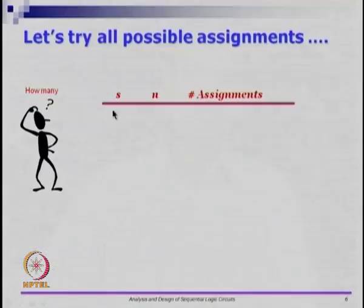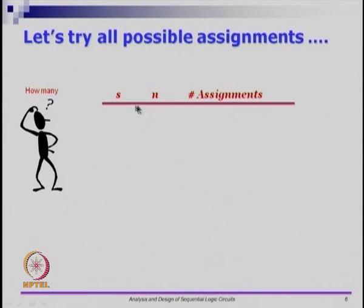The key question is how do you do this assignment carefully? If we look at s states in a state machine requiring n flip-flops — if I have s states, typically n = ceil(log2(s)). If I have 2 states, I require only 1 flip-flop and there are 2 possible assignments. You may actually try both assignments, see which one gets the least hardware, and stick with it.